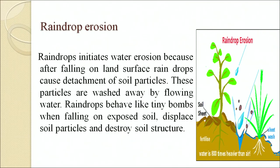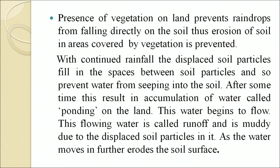Water erosion can occur due to raindrop, sheet, rill, stream bank, landslide and coastal erosion. Raindrop initiates water erosion because after falling on the land surface, raindrops cause detachment of soil particles which are then washed away by flowing water. Raindrops behave like tiny bombs when falling on exposed soil, displacing soil particles and destroying soil structure. Presence of vegetation prevents raindrops from falling directly on the soil, thus preventing erosion.